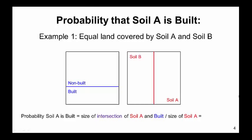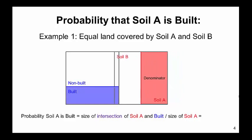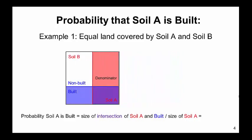Here we see two maps of the same study area. The map on the left shows 30% built versus 70% non-built. The map on the right shows 50% soil type A and 50% soil type B. To compute the probability that soil A is built, the denominator is the total area occupied by soil A. By overlapping the maps, we can determine what proportion of soil A has been built on. The numerator is the intersection of built and soil A. The resulting ratio is 0.3, which is the probability that soil A has been built on.